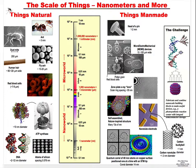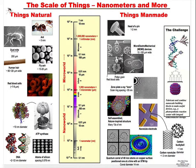A micrometer is 10 to the negative 6 meters. A nanometer is 1,000 times smaller than a micrometer. To put it in perspective, if an ant is 5 millimeters, a red blood cell is approximately 7 to 8 micrometers — about a thousandth of the size of that ant. And then we go 1,000 times smaller than that and get to nanometers — things that are very, very tiny.